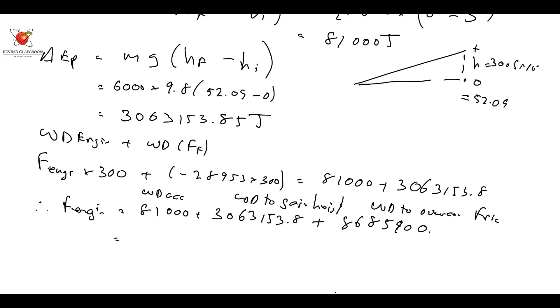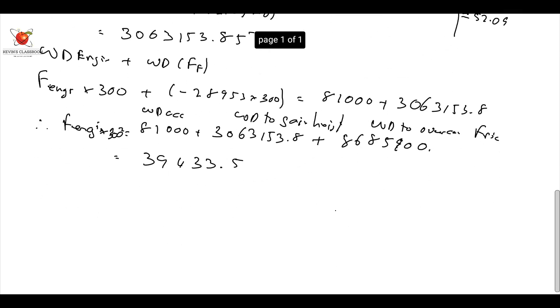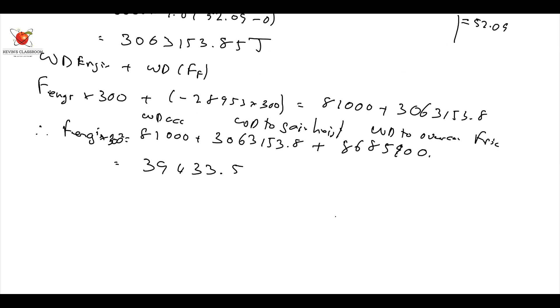Of course, times 300 is equal to that. So therefore, the F of the engine is going to be equal to 39,433.5, and I can say also that the work done by the engine, work done by the engine is going to be that number times 300 is going to be equal to 11830053.8 joules.